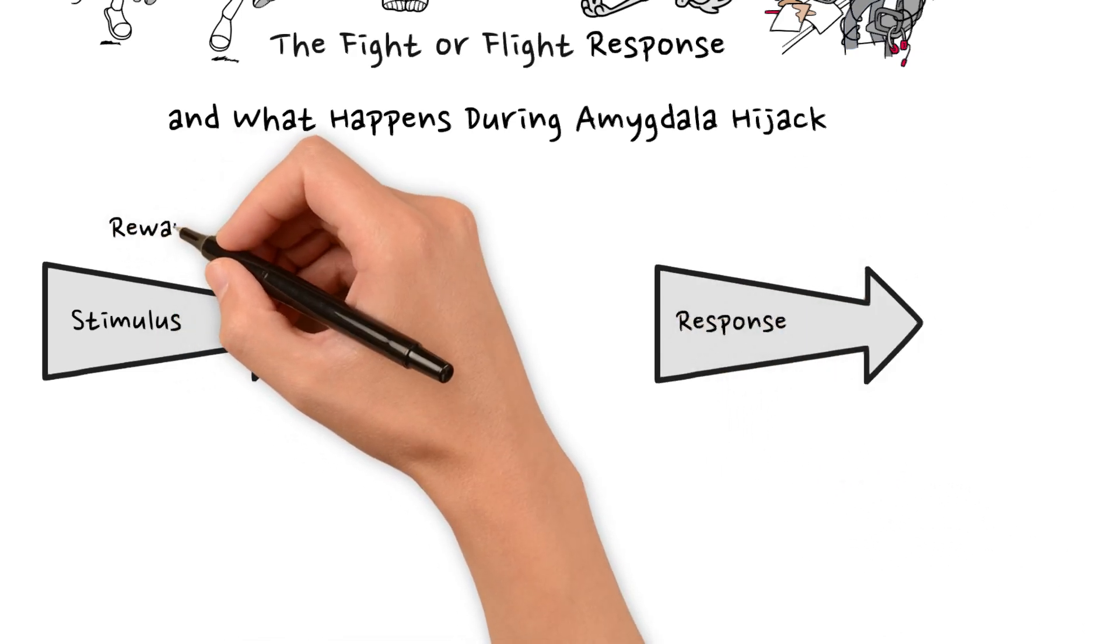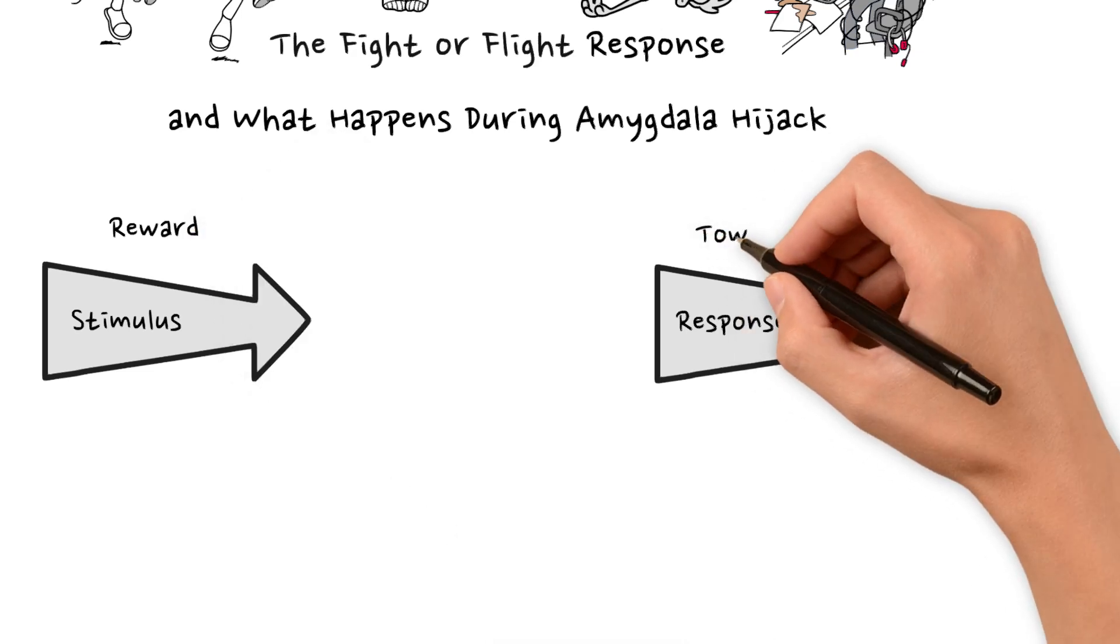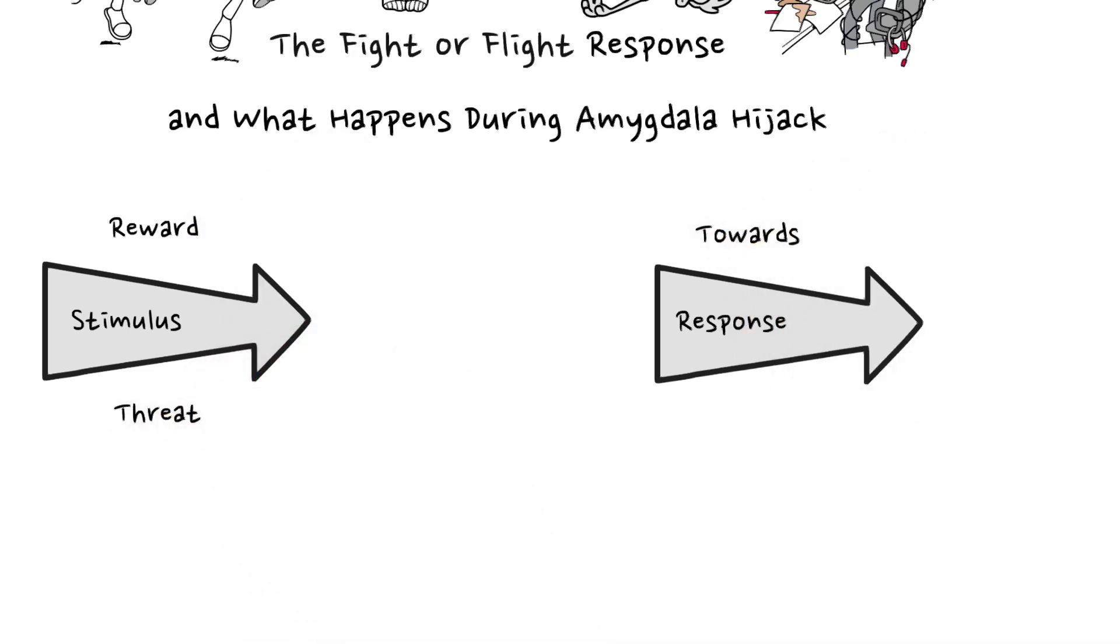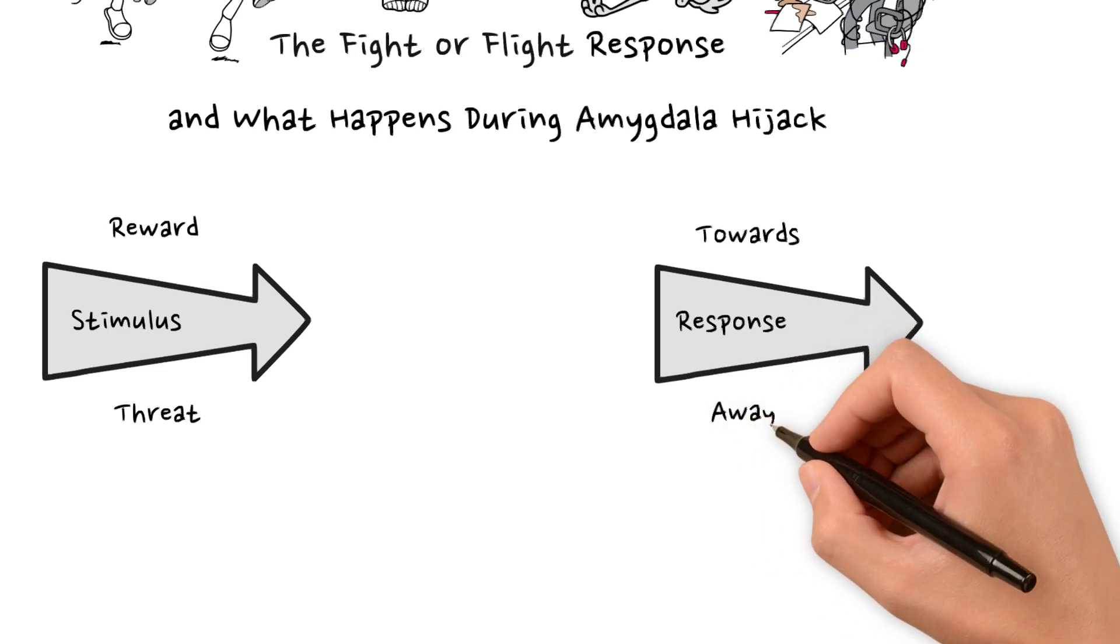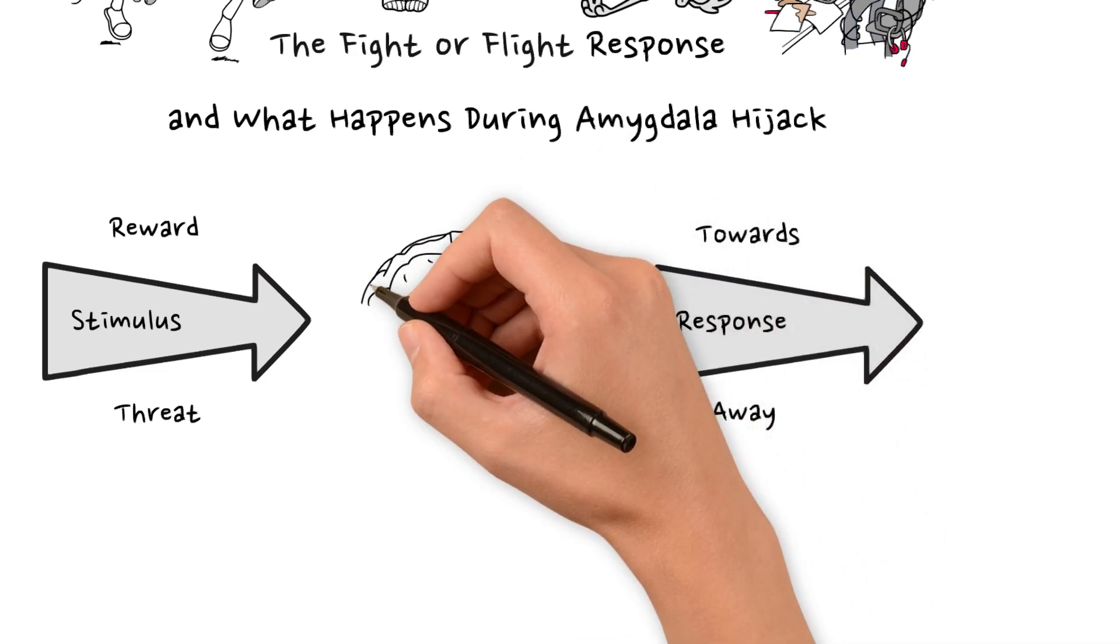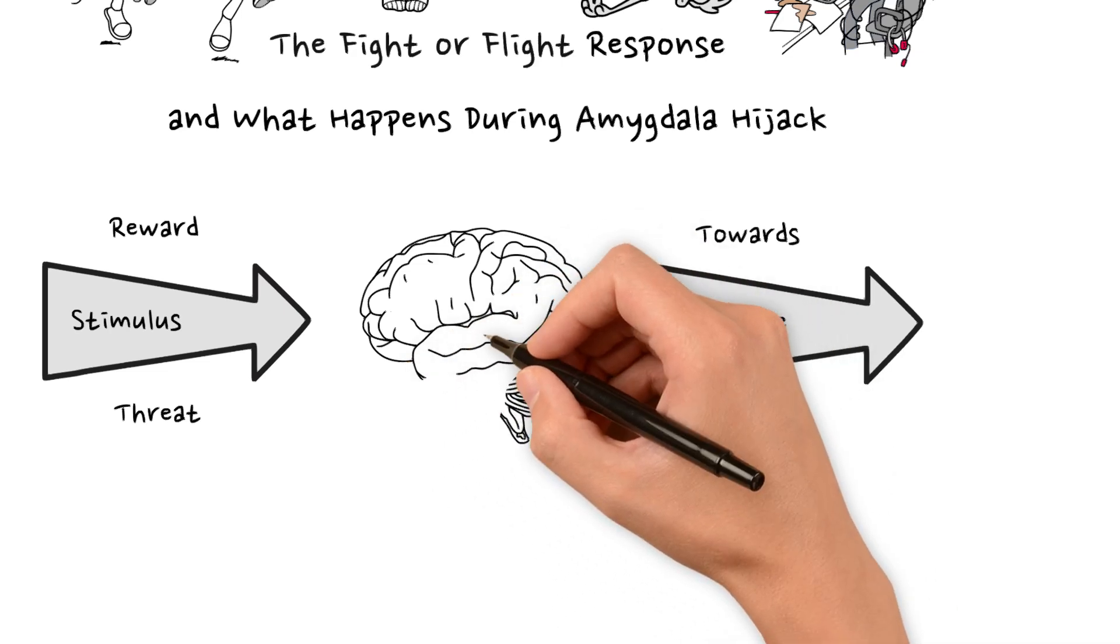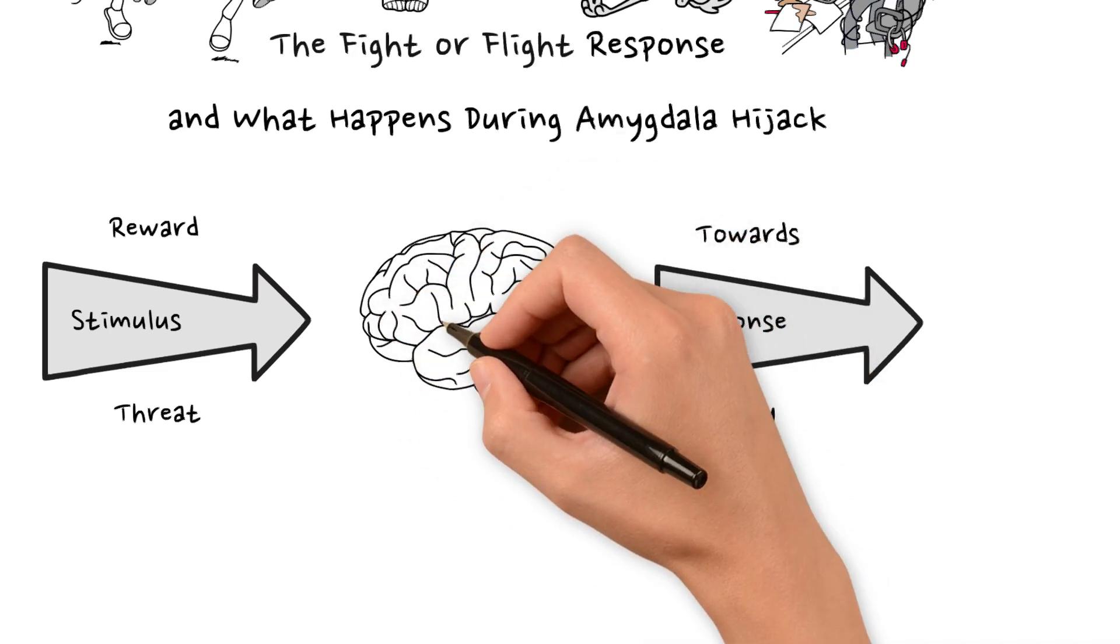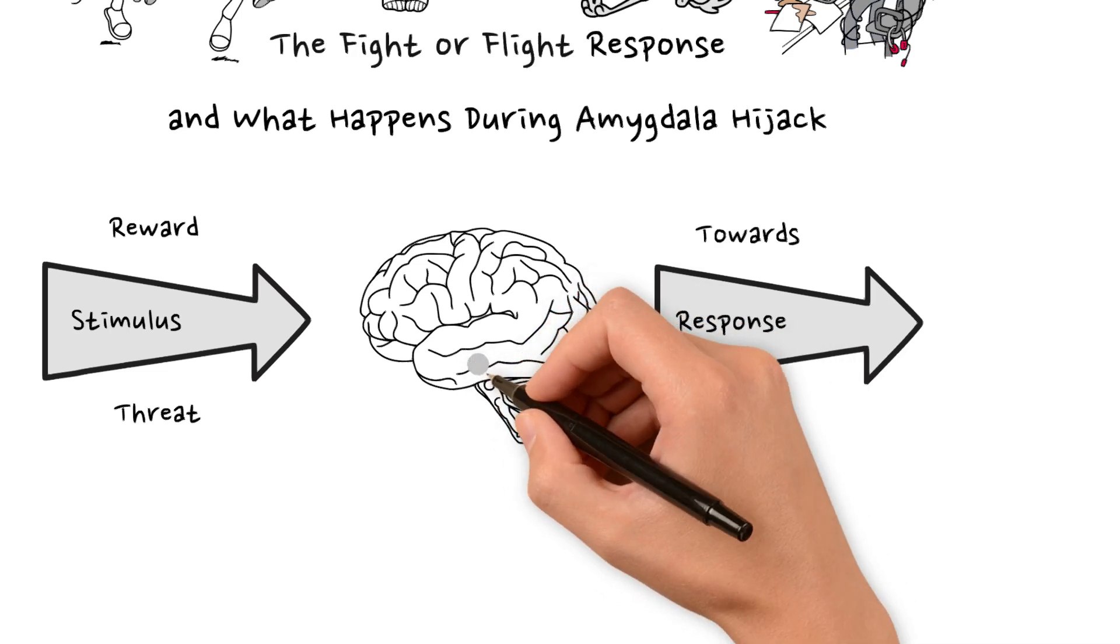If we perceive a situation to be rewarding, we will act in one way. If we find it threatening, we will respond in another. The fight-or-flight reaction is primarily there to help us survive physical threats. This human behavior is similar to many animal species' responses, and is triggered within the amygdala, one of the oldest parts of the brain in evolutionary terms.